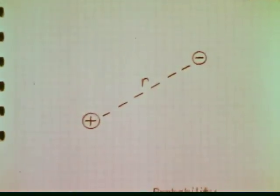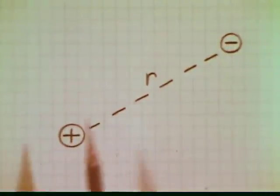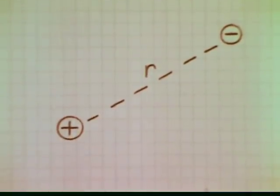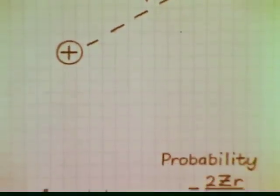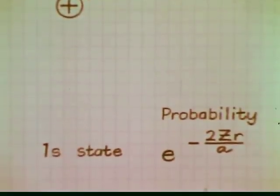One such property is the location of the electron relative to the nucleus. What can we learn from quantum mechanics about this? To answer this question, we will consider the 1s state, the lowest and most stable energy state of the hydrogen atom.